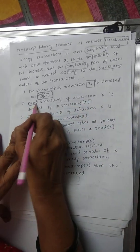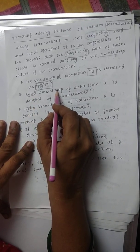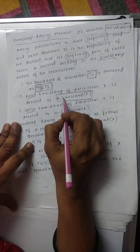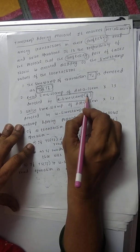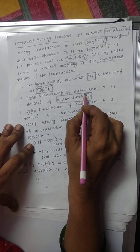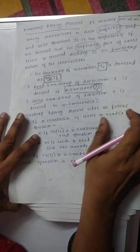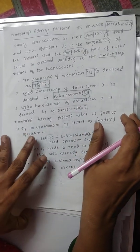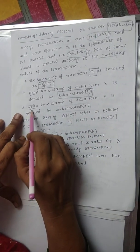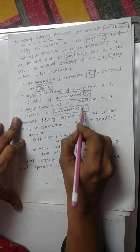Basically two operations are performed: read operation and write operation. For a read operation on a data item X, we assign a read timestamp, denoted as R-timestamp of X. When a write operation is performed — that is, when a transaction updates a data item value — we use W-timestamp of X.